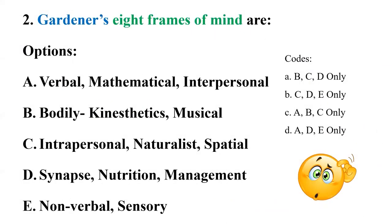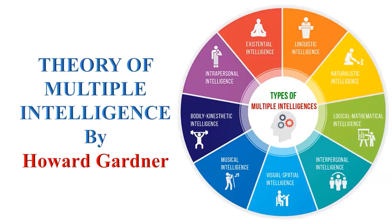Question two: Gardner's eight frames of mind. The given options include A) verbal, mathematical, interpersonal; B) bodily kinesthetic. The given codes are: code A — capital B, C, D, E only; code B — capital A, B, C only; code C — capital A, D, E only. Let's understand the theory of multiple intelligences, given by Howard Gardner.